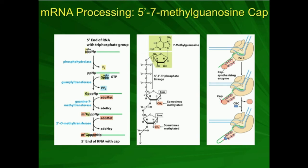We can also methylate other positions — sometimes very close to the 5' end, we have the 2' hydroxyl group on the ribose rings being methylated. One thing that's also unusual about this linkage is that normally we think of phosphate linkages between the 5' position of one sugar and the 3' of the other. But notice that this triphosphate linkage is between the 5' of one sugar and the 5' of the next — so it's a very unusual 5'-5' triphosphate linkage. That puts the 5' 7-methylguanosine cap on there.